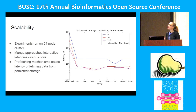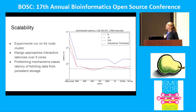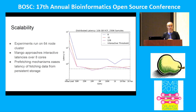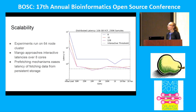The next question is how do we scale up to larger amounts of data? Running on the 1,000 Genomes variant set, we're achieving about the interactive threshold of 500 milliseconds once we scale up to about 32 cores. We are flattening out a little bit past 32 cores, so we're working to get better horizontal scalability, but right now we're pretty happy with these results once the data is loaded into memory.